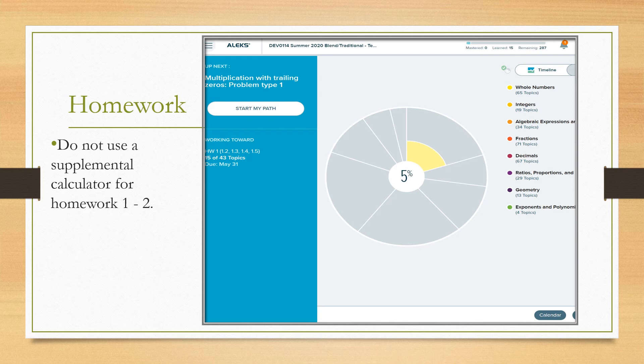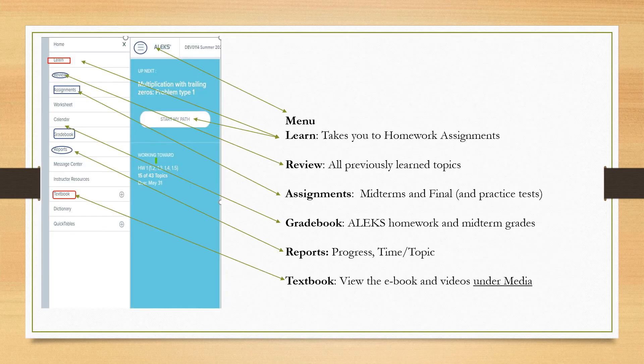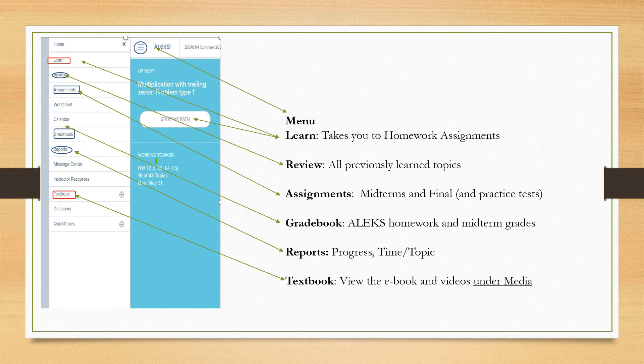Beginning with Homework 3, you're welcome to use a calculator for all work. If you click on the three horizontal bars, you'll find the menu button. Under the Learn button, this will take you to your homework assignments. Under the Review button, you'll find all previously learned topics. Under the Assignments heading is where you will take midterms and your final exam, as well as practice tests. Under the Gradebook heading, you'll find your Alex homework grades.